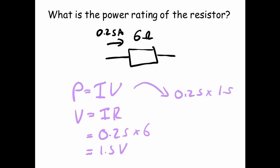Next, we're going to use P equals IV. So we've got 0.25 for our current. Our voltage across our resistor is 1.5. That gives us 0.38 watts.